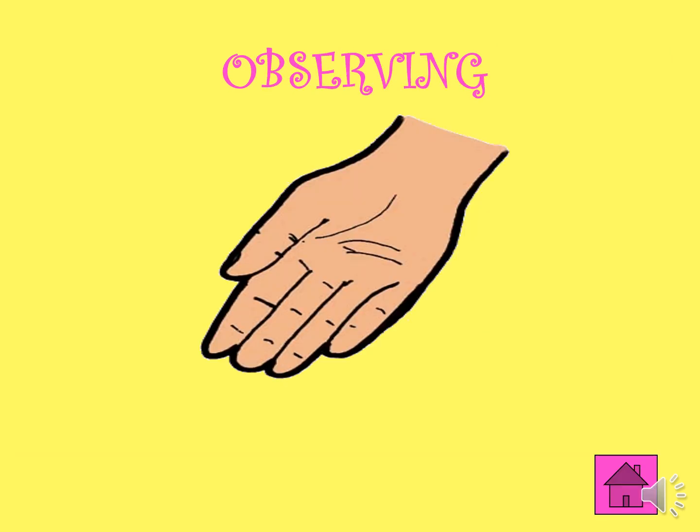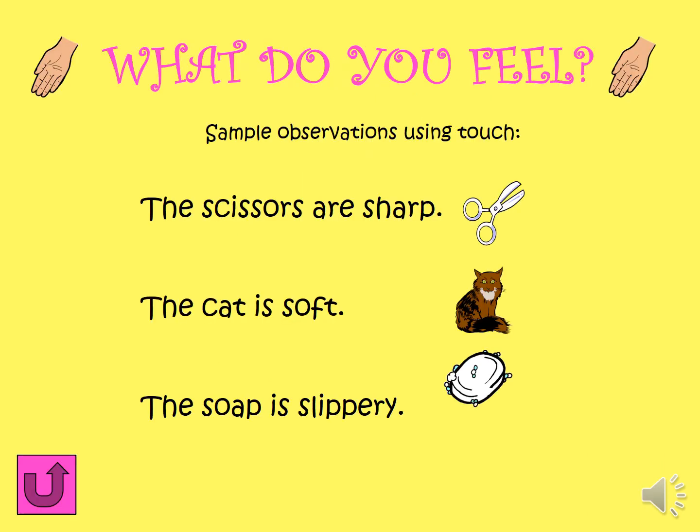Next, our hands or our skin. We use our hands or our skin to feel or touch. Here are some sample observations using our touch. The scissors are sharp. The cat is soft. The soap is slippery.